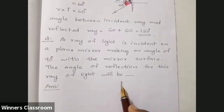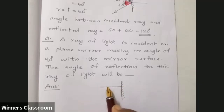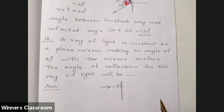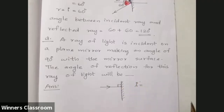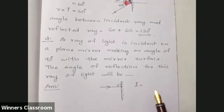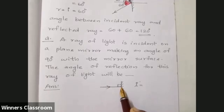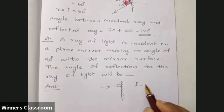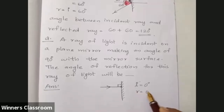The ray of light is incident on a plane mirror at an angle of 90 degrees with the mirror surface. The angle of incidence is 0 degrees, because the normal at the point of incidence coincides with the incident ray. Therefore, the angle of reflection is also 0 degrees.